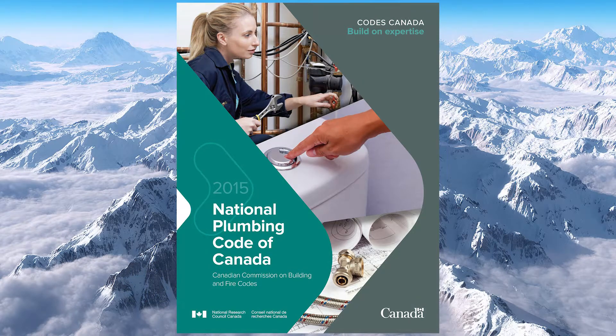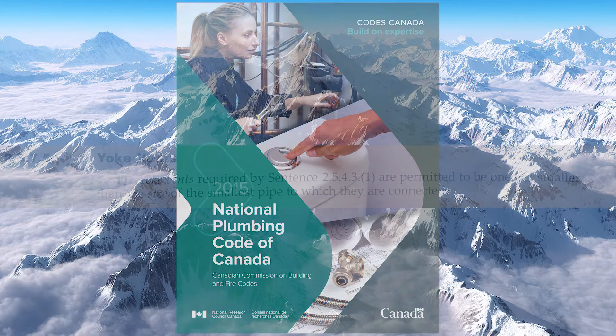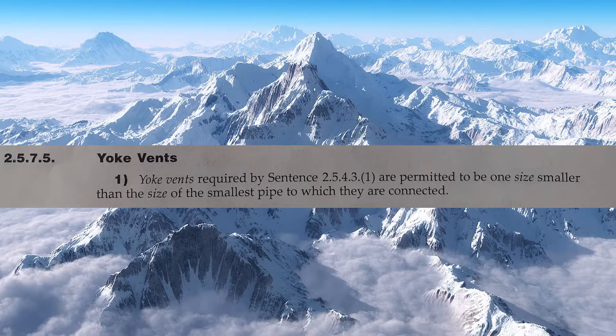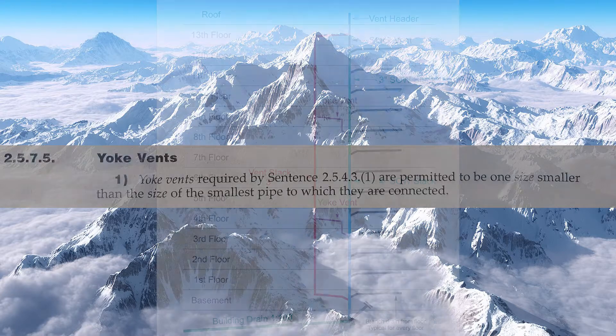All plumbing code references will be made from the 2015 National Plumbing Code of Canada. Now, in order to size yoke vents, we need to read Clause 2575. Yoke vents, required by sentence 25431, are permitted to be one size smaller than the size of the smallest pipe to which they are connected.